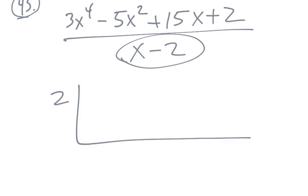We take the remainder, the denominator, and if x minus 2 equals 0, then x is 2. So that's the divisor.